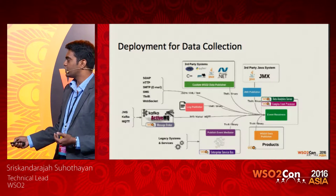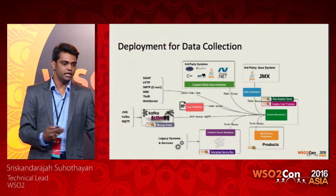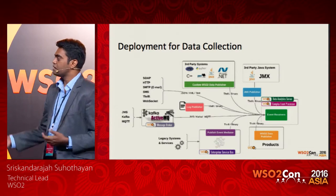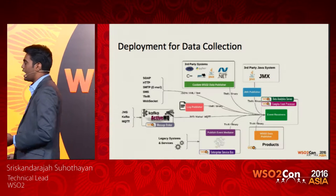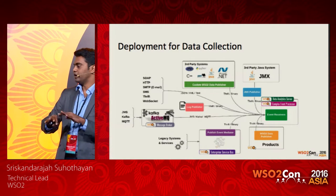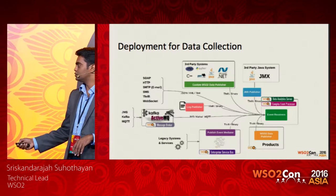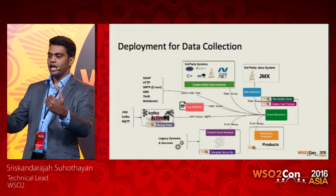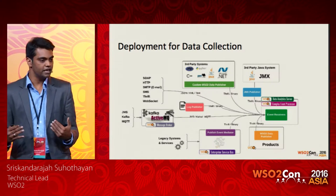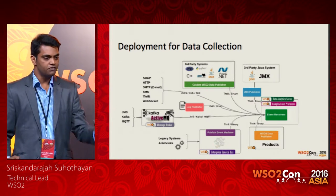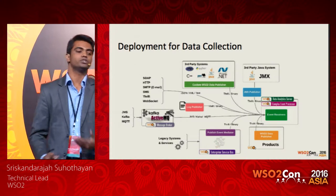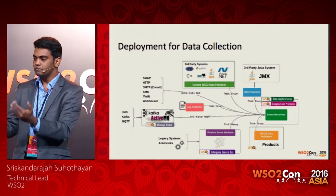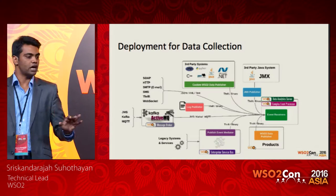For the worst-case scenario — a legacy system where you can't push anything in — we have an amazing ESB integration platform which can collect data from that and push it in. The last resort is to use the log publisher to publish the logs. You can get data from different levels and layers: system information, network information, business-related information. There is a lot of data in your organization — just think about what systems you have and what they produce, and you can collect data to start with.